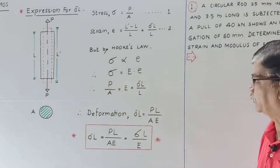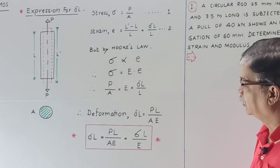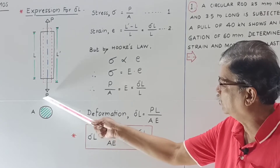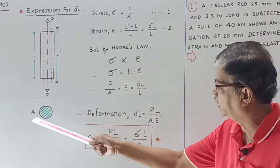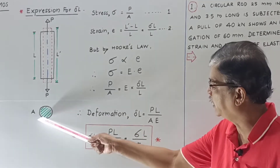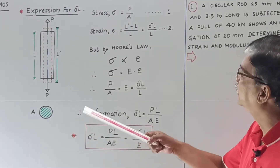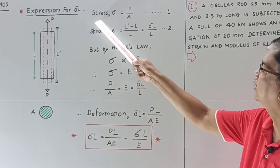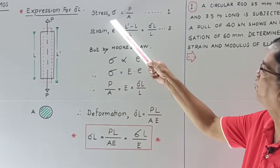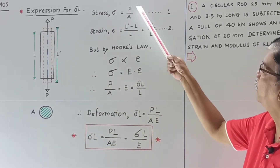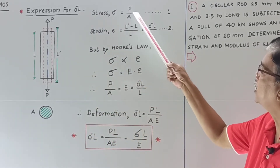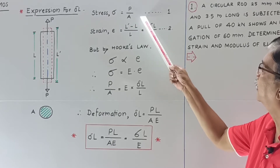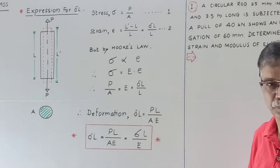Now, this is pull P and this is area A, cross-sectional area. Therefore, stress sigma will be equal to P upon A. Let us say this is the first expression.